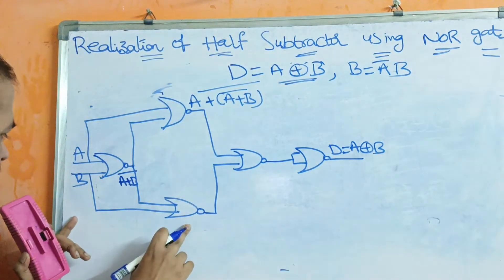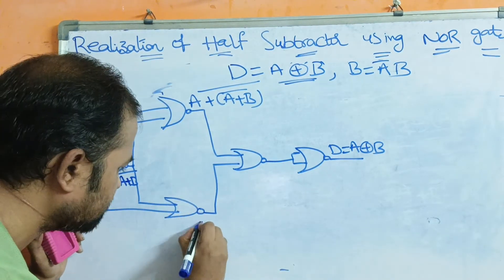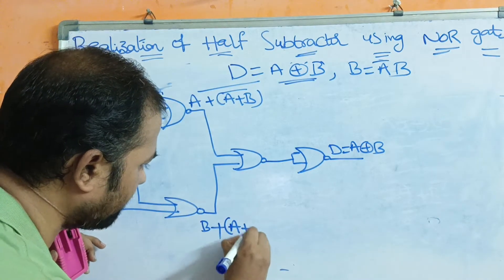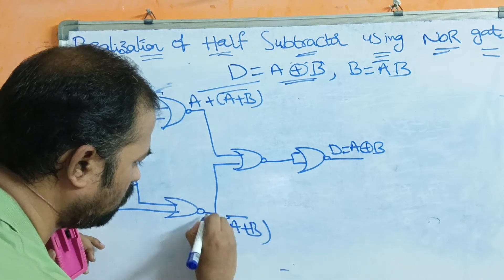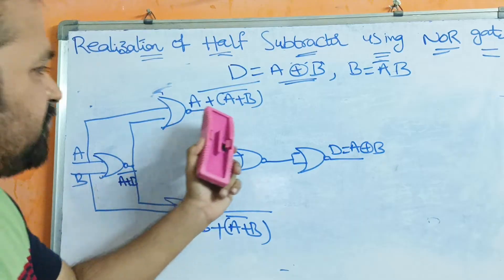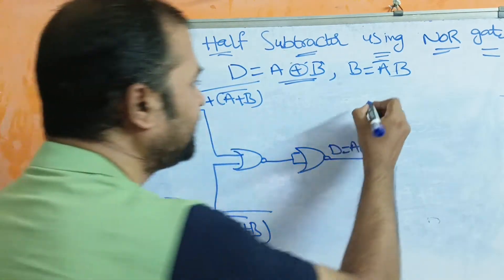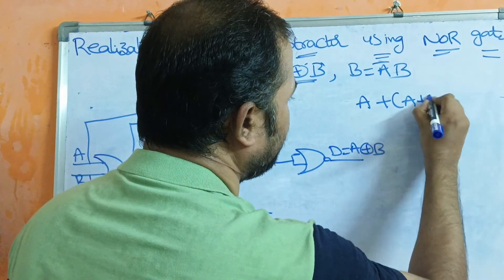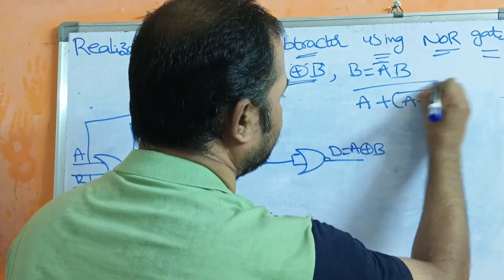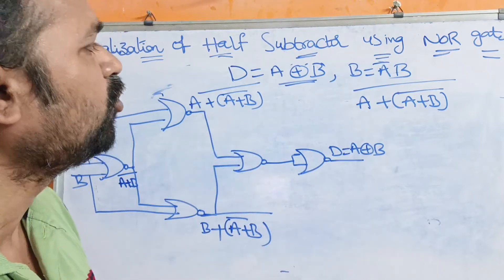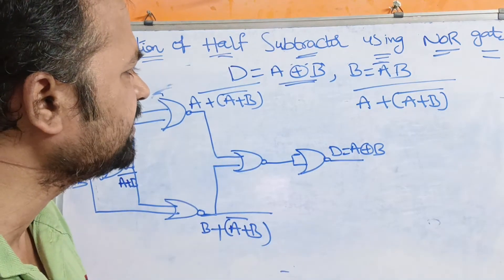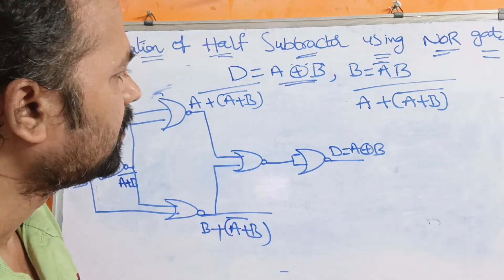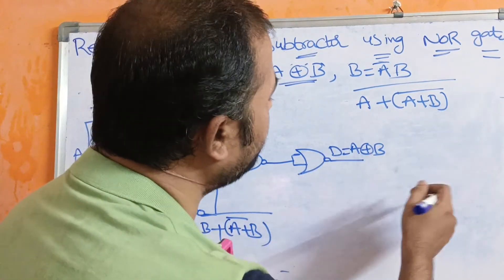For the third NOR gate, the inputs are B and (A + B)-bar, so it produces (B + (A + B)-bar)-bar. Now let us simplify the second NOR gate's output. The expression is (A + (A + B)-bar)-bar. This is in the form of (A + B)-bar, which by De Morgan's law equals A-bar · B-bar.